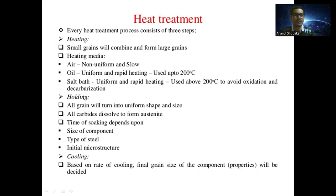The next process of heat treatment is holding, which means keeping the metal at that temperature for a particular period of time so that all grains will turn into uniform shape and size, and all carbides dissolve to form austenite.